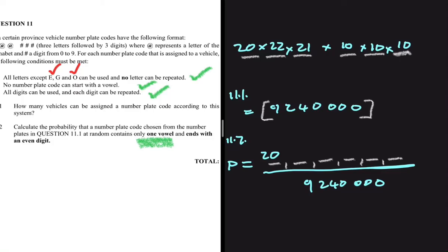We choose from three vowels because E and O are removed, so we multiply by 3. Now for the third letter position: from the 23 allowed letters we have used two so far, leaving 21 — but we need to consider whether to simply place 21 there.